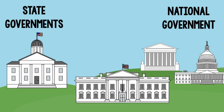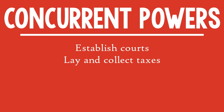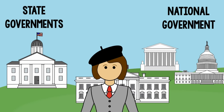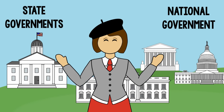Finally, the national government and state governments share some powers. These concurrent powers include the power to establish courts, lay and collect taxes, borrow money, and pass laws, just to name a few. Government at all levels also has the responsibility to protect individual rights.